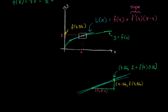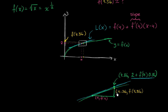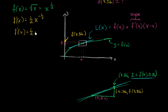So let's figure out what f'(4) actually is. f'(x) is going to be 1/2 times x to the negative 1/2, using the power rule. So f'(4) equals 1/2 times 4 to the negative 1/2. Since 4 to the 1/2 is 2, then 4 to the negative 1/2 is 1/2. So this equals 1/2 times 1/2, which is equal to 1/4.